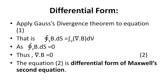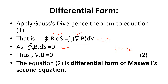Now for the differential form, we apply the Gauss divergence theorem to equation number one. This theorem is used to convert the surface integral to a volume integral. Equation one is the closed integral of B dot dS equals zero. After applying the divergence theorem, it becomes the integral of (del dot B) dV equals zero. But the integral of dV cannot be zero.